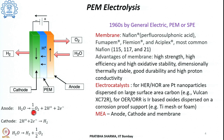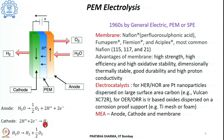On the anode side, the reaction produces half O₂ plus 2H⁺ plus 2 electrons — oxygen gas is evolved, hydrated protons are produced, and 2 electrons are liberated. The electrons follow the external circuit, while the proton ions migrate through the membrane. When they reach the cathode side, the protons undergo reduction to produce hydrogen gas.